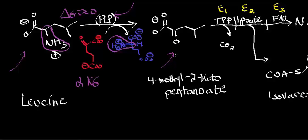If you're loading the system up with leucine, that's going to force this reaction to go towards 4-methyl-2-ketopentanoate. Also, if the dehydrogenase complex is consuming 4-methyl-2-ketopentanoate, you're taking the product out of the system, which forces the reaction to make more. So in general, if you eat a high-protein diet, you're loading your system up with leucine, and if you're degrading proteins to amino acids, you're increasing leucine concentration, so this reaction goes in the forward direction.